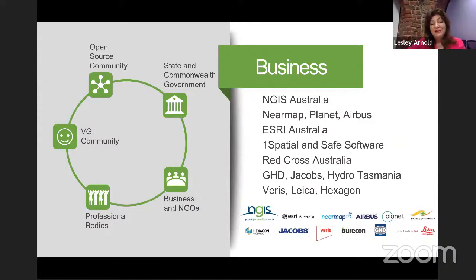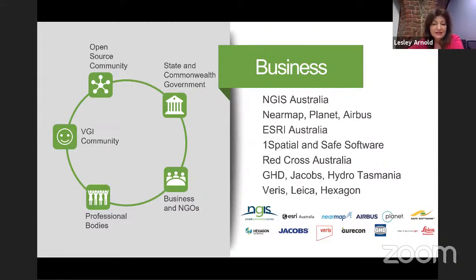Businesses were a key part. MGIS Australia put all the technical stuff together. We had millions of dollars worth of imagery provided by Nearmap, Planet and Airbus. Software came from Esri, One Spatial and Safe Software. Red Cross were heavily involved, providing teams of people to collect data. People also supported our venues where we held the mapathon in person — GHD, Jacobs, Hydro Tasmania, Varus, Lyca and Hexagon.